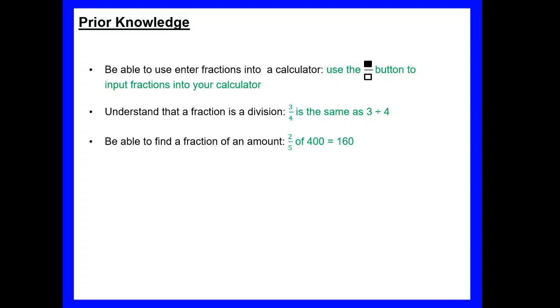You should also understand that a fraction is simply a division, so three over four, three quarters, is the same as three divided by four. And be able to find the fraction of an amount, so two-fifths of 400. If we wanted to do that in a calculator we would type in two-fifths multiplied by 400 and we get 160.